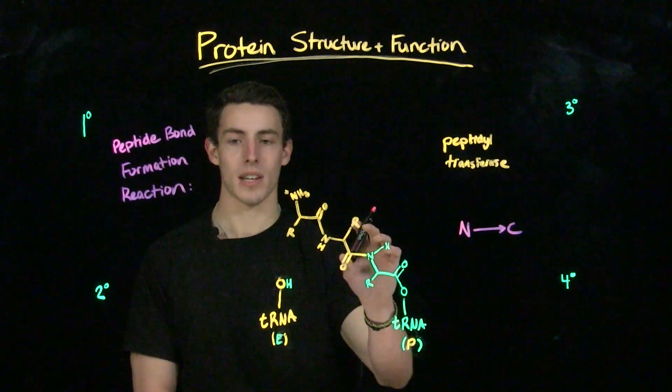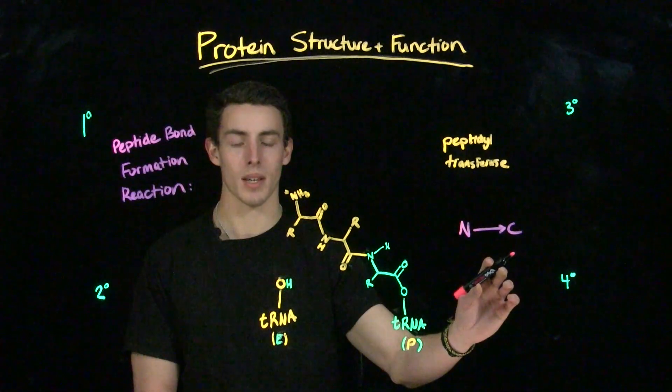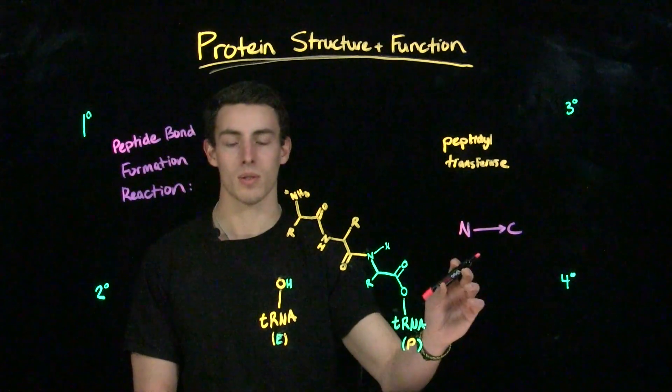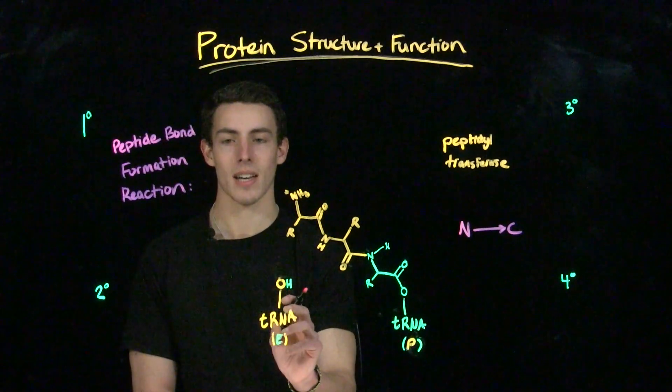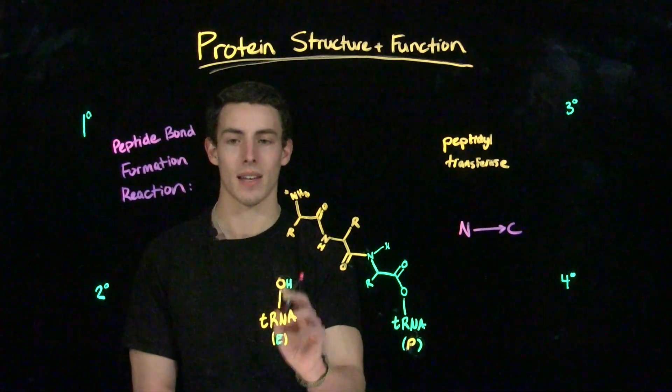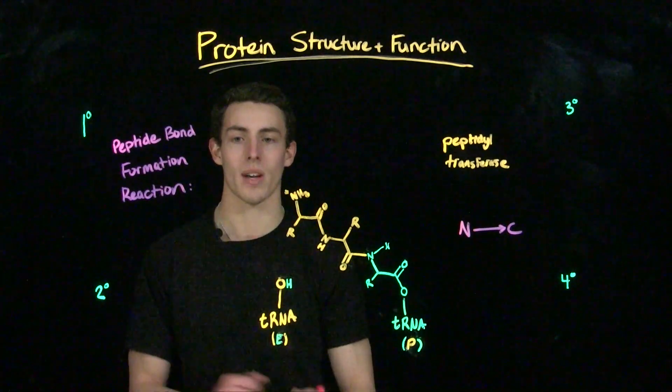And again, the polypeptide chain is going to be transferred to the tRNA in the aminoacyl site, which is going to become the peptidyl tRNA, and that's going to force this peptidyl tRNA into the E-site, because it's now empty, and then that's going to exit. And it's just going to keep going on and on until we reach termination of translation.